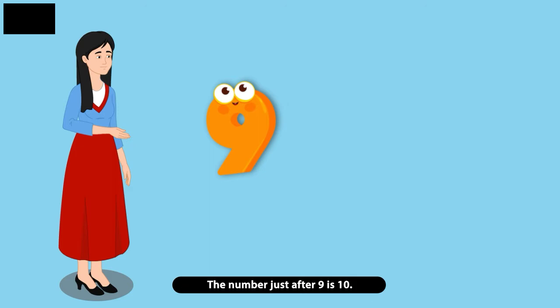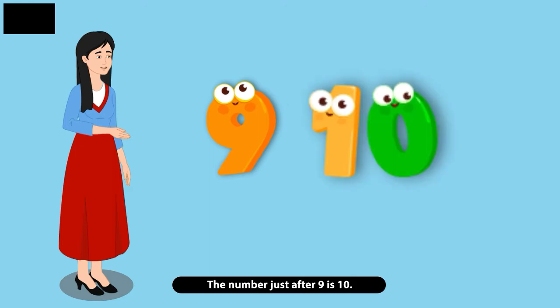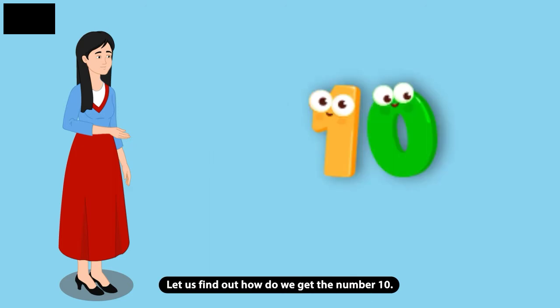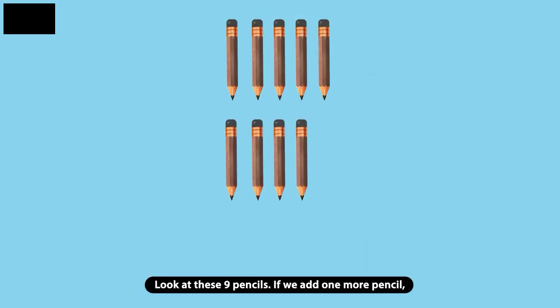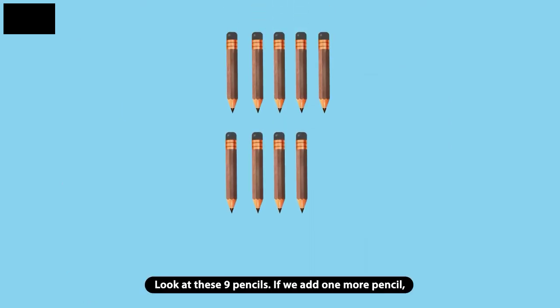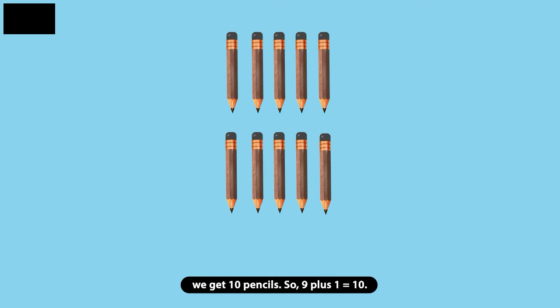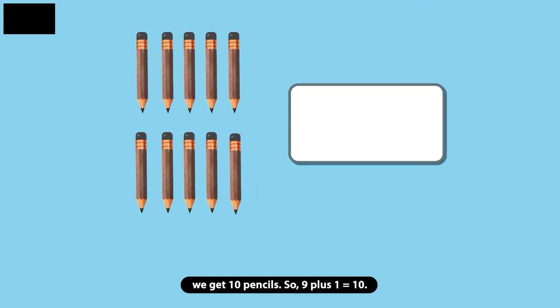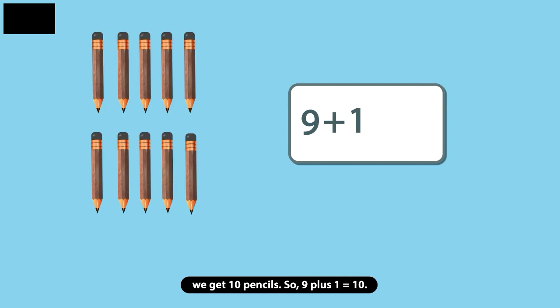The number just after 9 is 10. Let us find out how we get the number 10. Look at these 9 pencils. If we add one more pencil, we get 10 pencils. So 9 plus 1 is equal to 10.